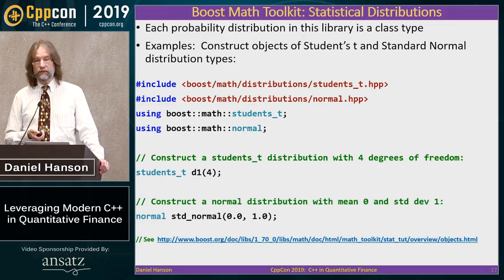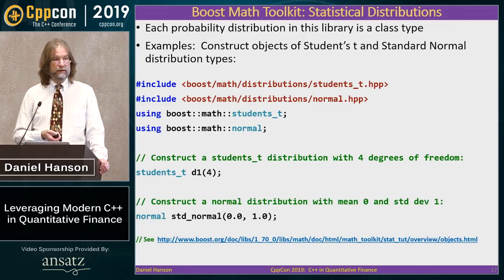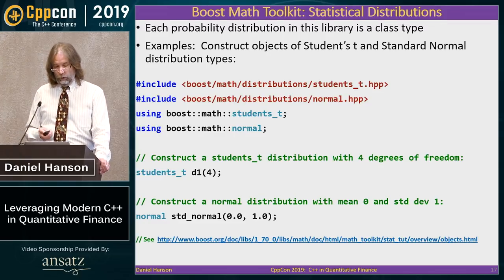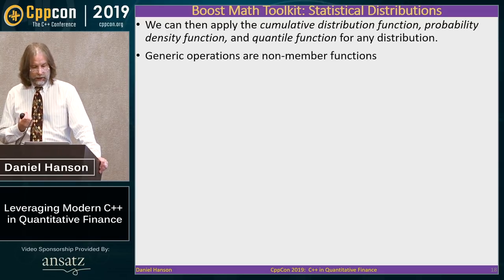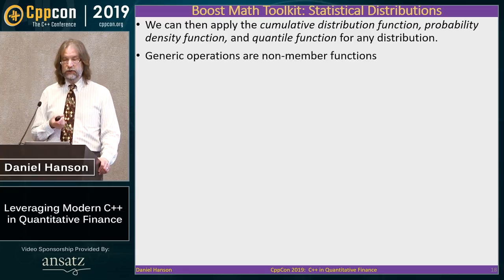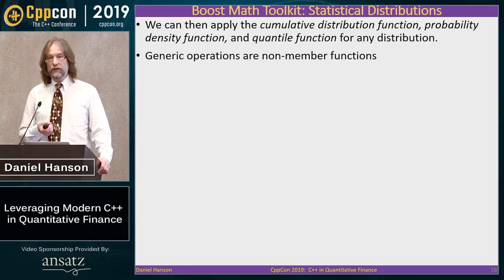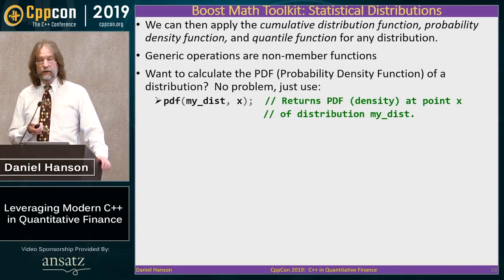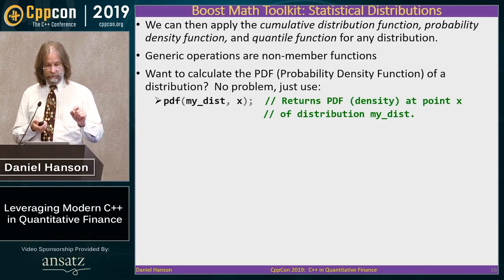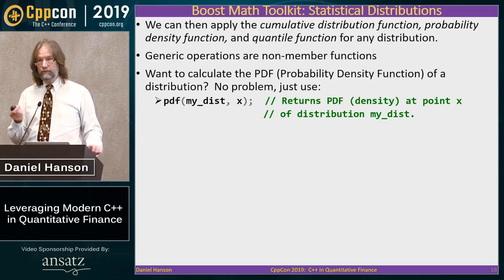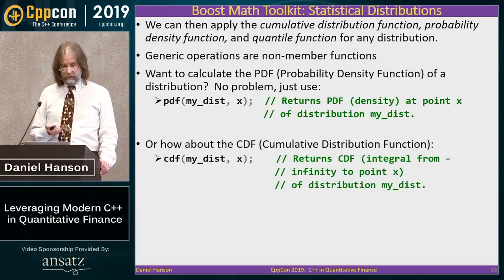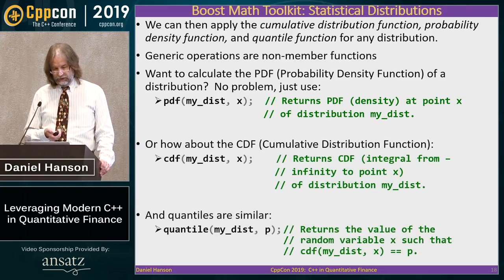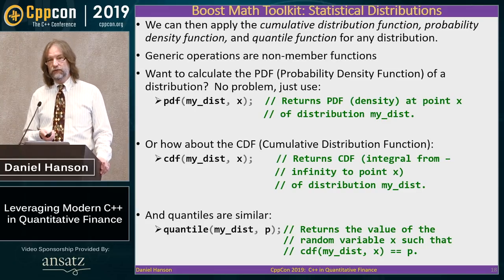The functions are implemented in Boost as generic non-member functions, but extremely easy to use. For PDF, you just call pdf with your distribution object and the value of x at which you want to evaluate it — done. Same thing for the CDF, and similarly for the quantile function, except you replace x with the percentile value.